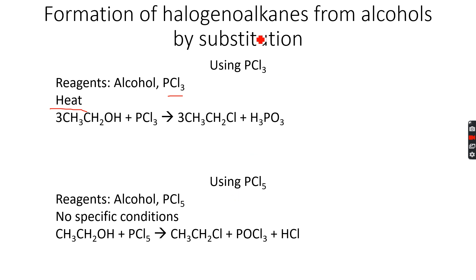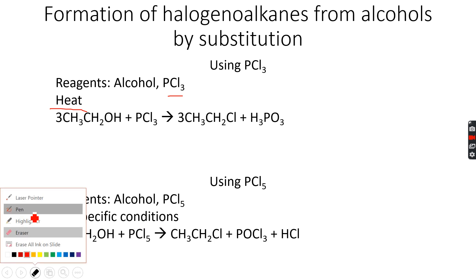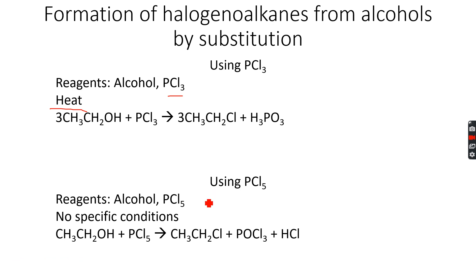You can also use PCl5 instead of PCl3. PCl5 is my favorite reagent to carry out this reaction because you don't need any specific conditions — it can happen at room temperature. When you use PCl5, you get chloroethane again, but instead of H3PO3, you get POCl3 and HCl. You should remember these products as well.